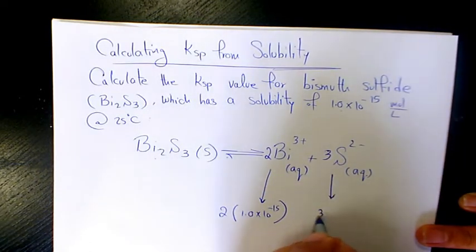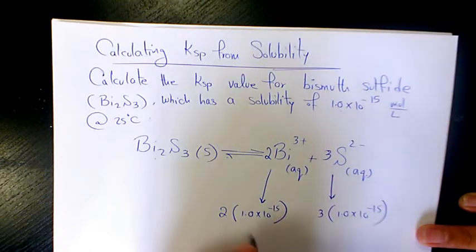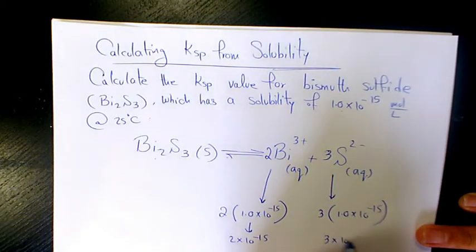bismuth ion and three times 1.0 times 10 to the power of negative 15 of sulfide. So that's going to be two times 10 to the power of negative 15. This one is going to be three times 10 to the power of negative 15.